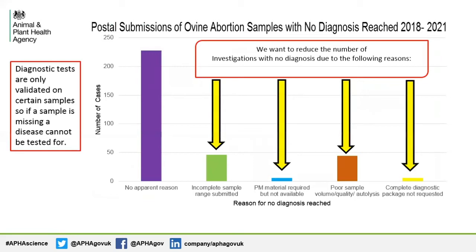This slide gives you an insight into why a diagnosis was not reached on postal submissions to our centres between 2018 and 2021. In the majority of cases, there was no apparent reason, but please make sure you have filled in as much information as possible on the submission form so we can support you better. The next most common reason was incomplete sample range submitted. Please remember that each diagnostic test is only validated on certain samples, so it is crucial to submit the full sample set.